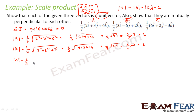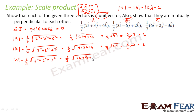Similarly, magnitude of C vector is 1 by 7 times root of 6 squared plus 2 squared plus 3 squared, that is 1 by 7 times root of 36 plus 4 plus 9, which gives again 1 by 7 times root 49 equals 1. So you can see that all are unit vectors. First part is done.